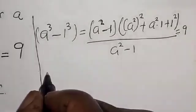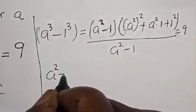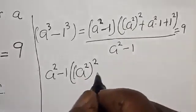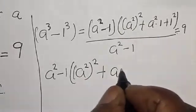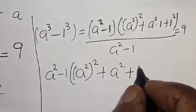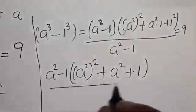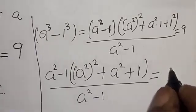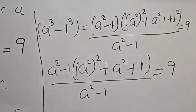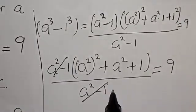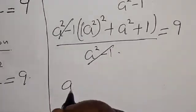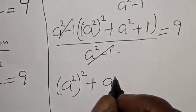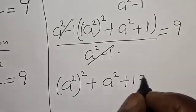Then divided by a squared minus 1, everything equal to 9. We have (a squared minus 1) times (a to the fourth plus a squared plus 1), divided by (a squared minus 1), equals 9. The (a squared minus 1) cancels, leaving us with a squared squared plus a squared plus 1 equals 9.